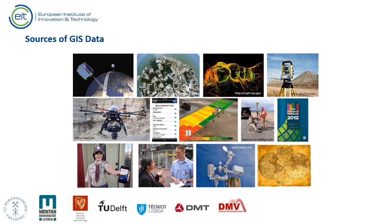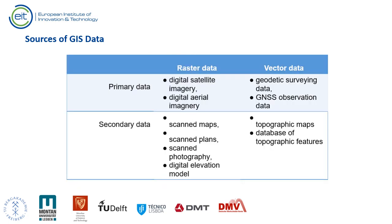The two main methods of data collection are data capture and data transfer. It is useful to distinguish between primary and secondary data sources. Primary spatial data are captured by direct measurement intended specifically for use in GIS, whereas secondary data sources are reused from other projects or systems. Typical primary data sources include raster satellite images and vector construction surveying measurements using GNSS or total station. Typical secondary sources include scanned paper maps, mining plans, or photography.